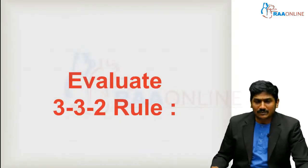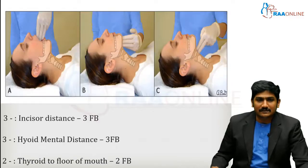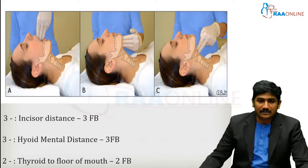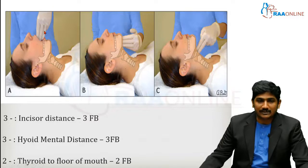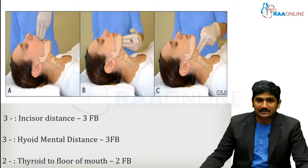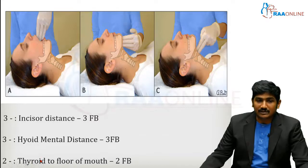The 3-3-2 rule: the first three stands for three finger-breadths between the upper and lower incisors — a minimum of three finger-breadths should be present, indicating adequate oral opening. The next three refers to the hyoid-to-mental distance — from the hyoid bone to the mentum — which should be a minimum of three finger-breadths, indicating whether the chin is retracted. The two stands for thyroid-to-floor-of-mouth distance, indicating whether the patient has a short neck.